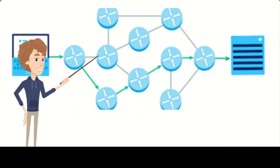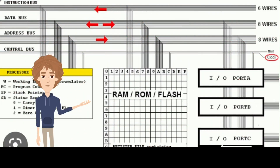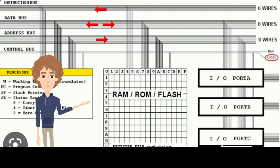When data is transferred across the data bus, it is broken down into smaller units called data packets. These data packets are then sent across the bus in parallel, which means that multiple packets can be transferred at the same time. In addition to carrying data packets, the data bus also carries control signals that determine when data is transferred and where it is going. These control signals are managed by a component called a bus controller, which ensures that data is transferred efficiently and accurately.